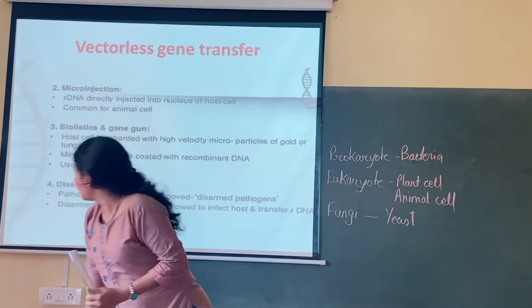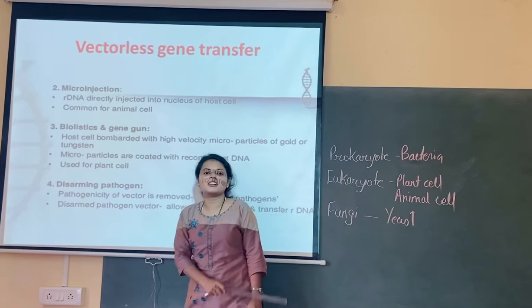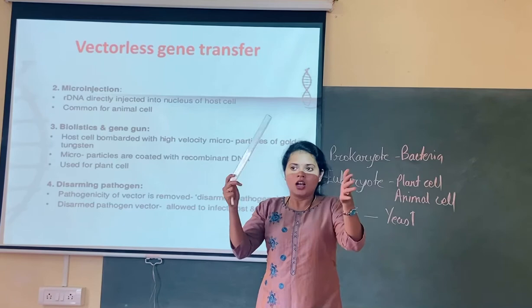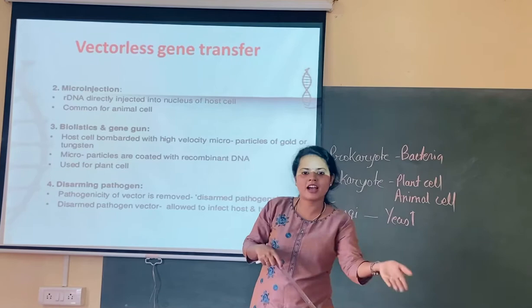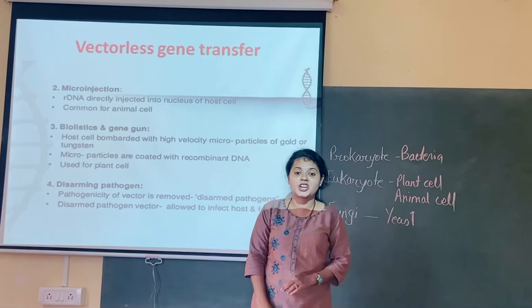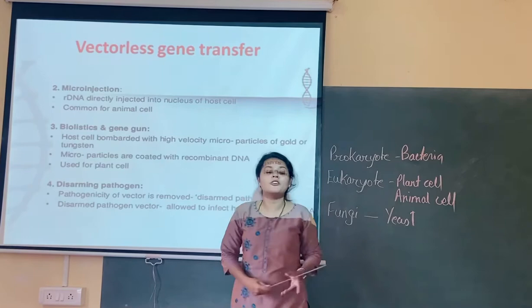Let me go through them one by one. The first vectorless method listed here is given as the second method because heat shock method is considered the first. The gene of interest can be directly inserted into the bacterial cell, placed on ice, then heat shock, and the bacterial genome will directly take that gene of interest. Now, the first vectorless technique is microinjection. What is microinjection and which organism is it used for?